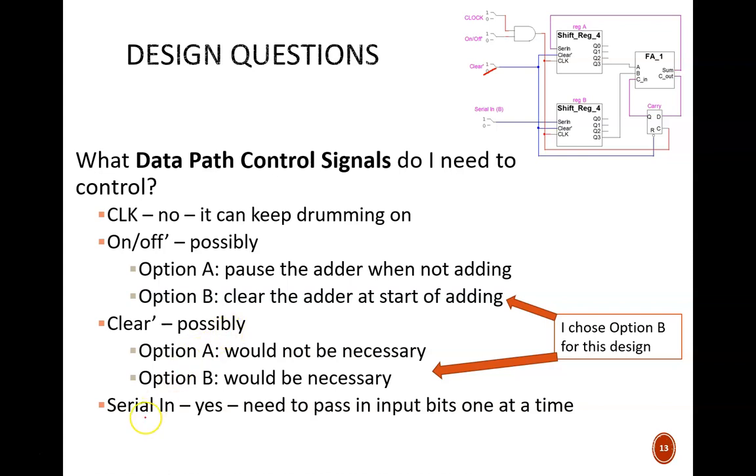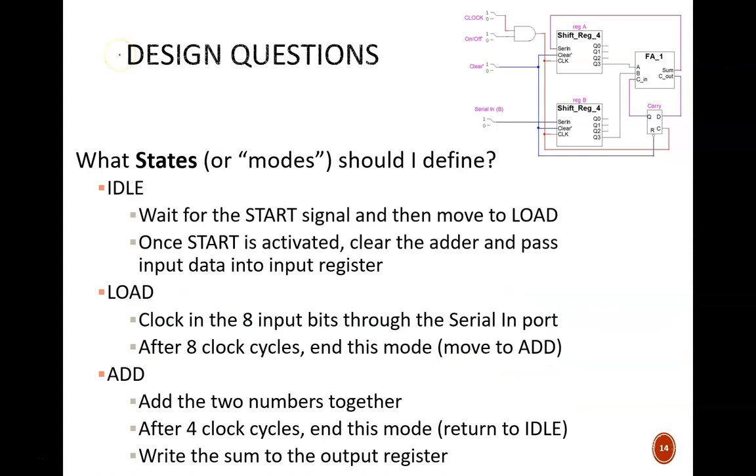The final input to the serial adder is the serial in. We need to control the flow of data from the 8-bit register mentioned earlier into this port. It must occur at the proper times, in the proper order. That covers the five arrows of the datapath control model, but there is one big piece still missing.